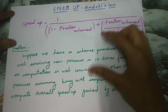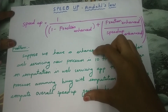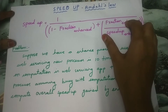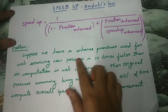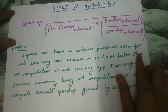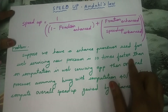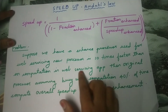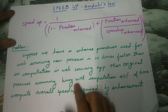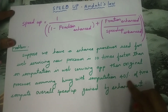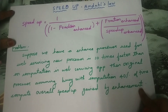Let us use this formula for the problem given below. Suppose we have an enhanced processor used for web servicing. The new processor is 10 times faster than the original on computation in the web servicing app. The original processor is assumed to be busy with computation 40% of the time. Compute the overall speed-up gained by the enhancement.